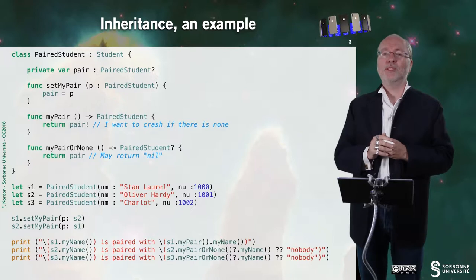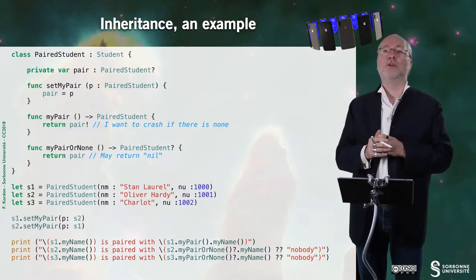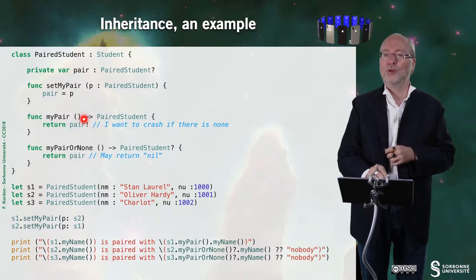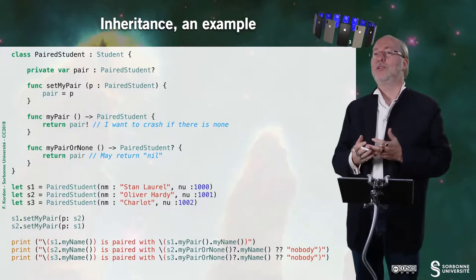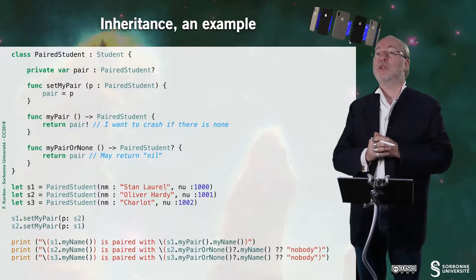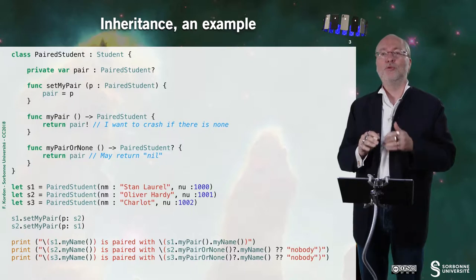And you see that there is a difference. So I refer to the video about optional. Here I must return a student. Here I may return nil. Here this pair student is a person question mark, so by default it is set to nil. So there is a default value. And so this property pair is not initialized.